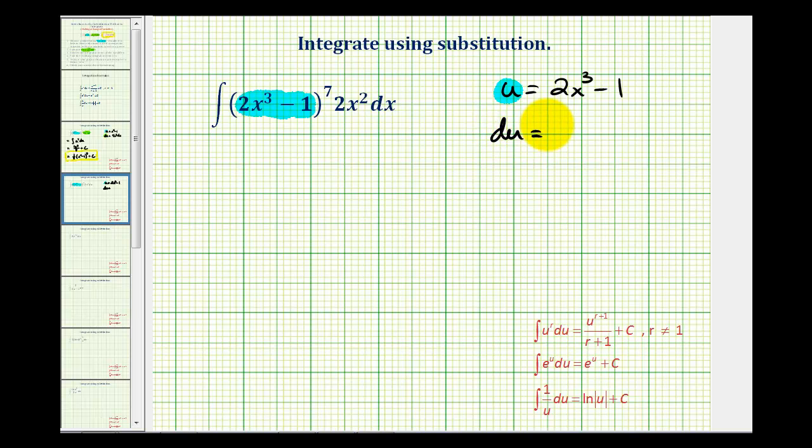Differential u is going to be equal to 6x squared dx. But notice how we have 2x squared dx. So what we'll do is divide both sides of this equation by 3 so we have a perfect match with what's left in the integral.